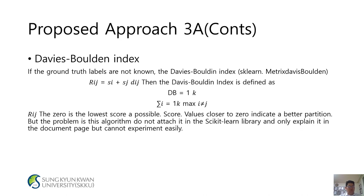Proposed Approach 3a — Davies-Bouldin Index: If ground truth labels are not known, the Davies-Bouldin index is used. It is defined as DB = (1/K) × Σ max(Rij), where Rij = (Si + Sj) / Dij. A score of 0 is the lowest possible, and values close to 0 indicate a better partition. However, the problem is that the algorithm is not directly attached in the scikit-learn library and is only explained in the documentation, making it difficult to experiment easily.